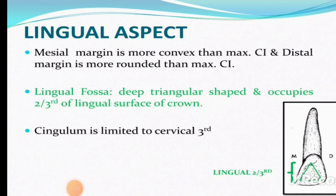The disto-incisal angle is more convex than the maxillary central incisor, and the distal margin is more rounded and more convex compared to the maxillary central incisor.